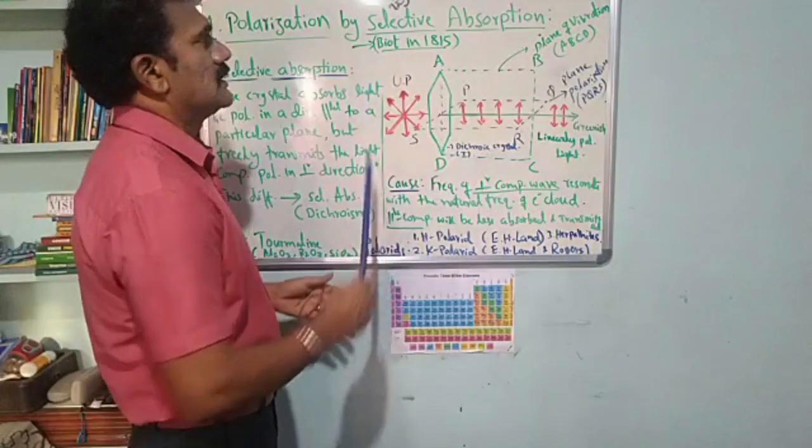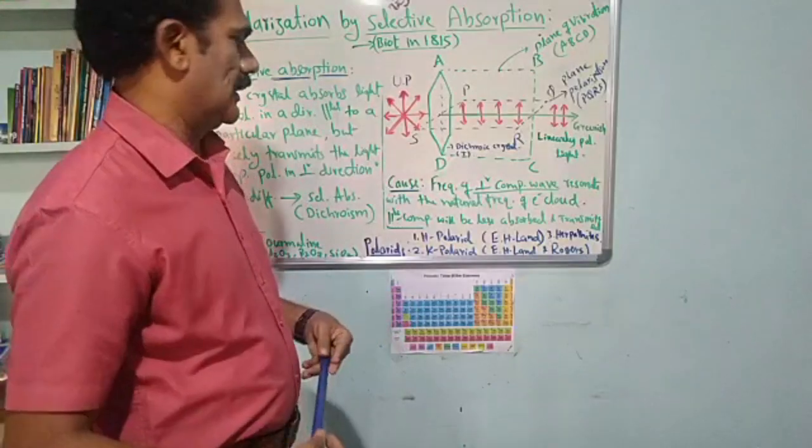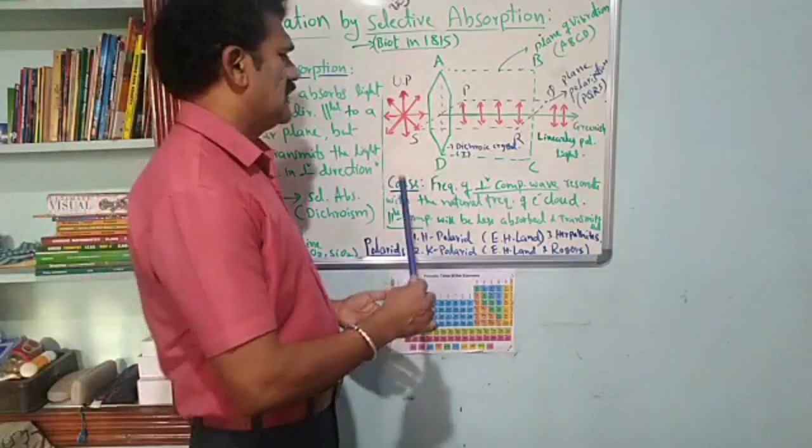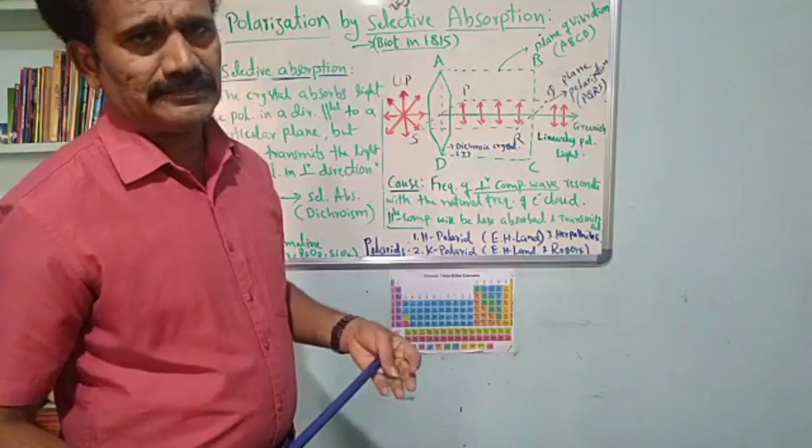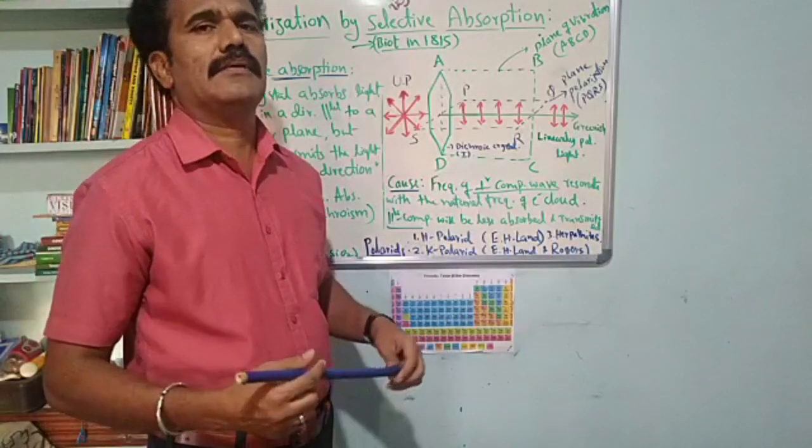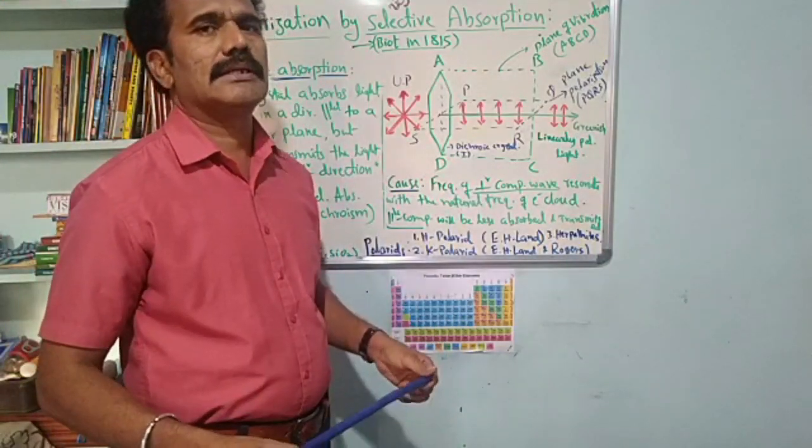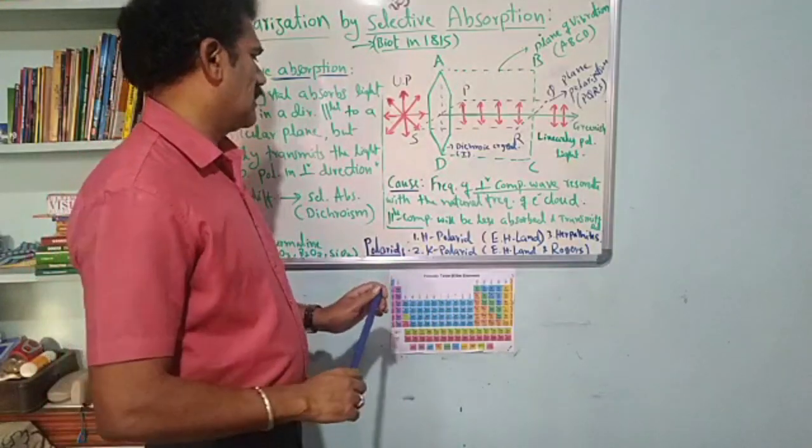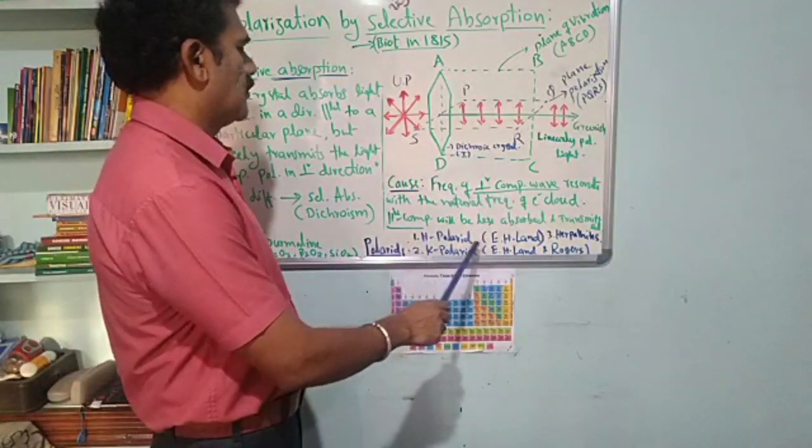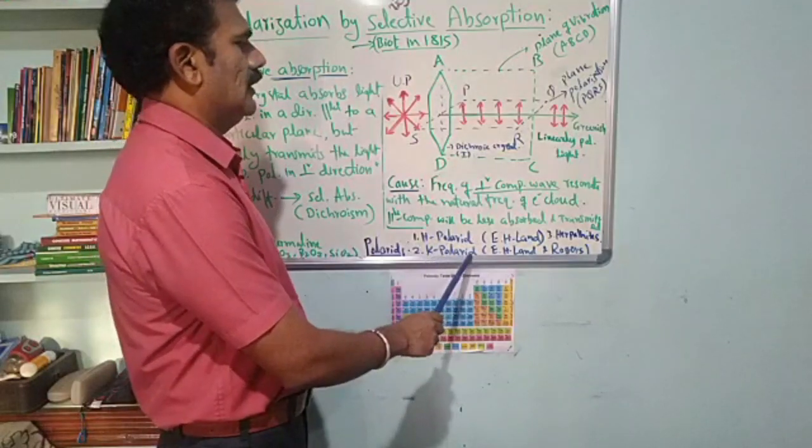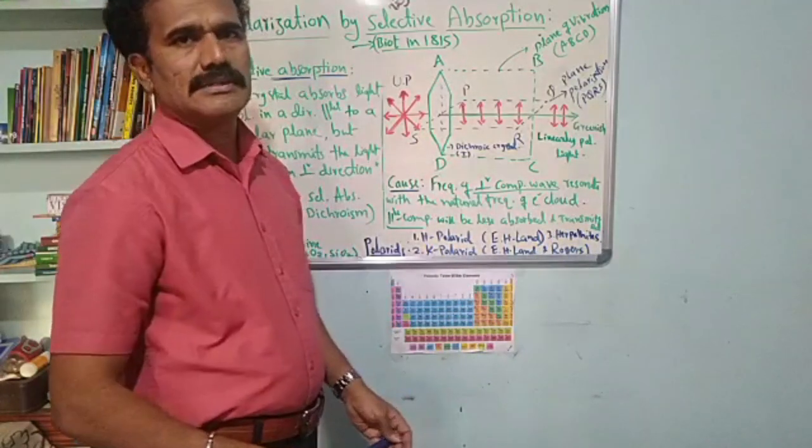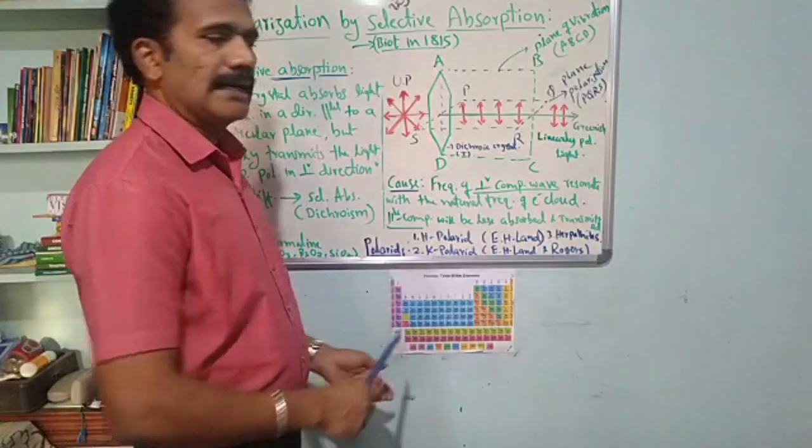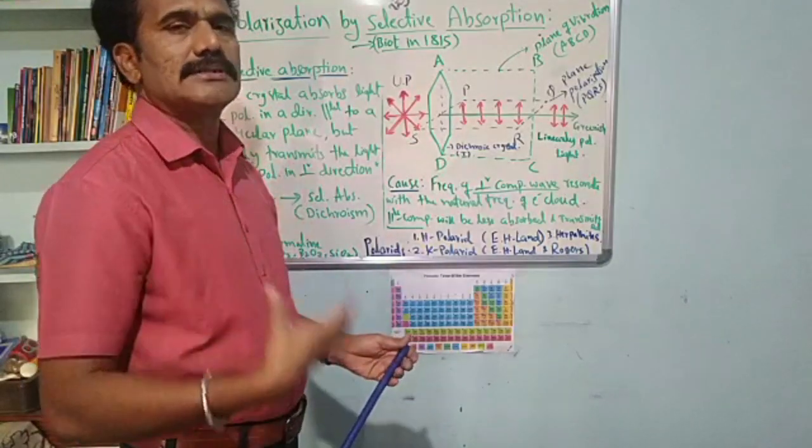Based on this mechanism, various types of optical devices have been developed to get polarized light. Some devices are named as H-polaroid, K-polaroid, and Herapathite. These are in general called polaroids, in which polarization takes place in only one component.